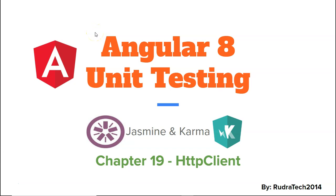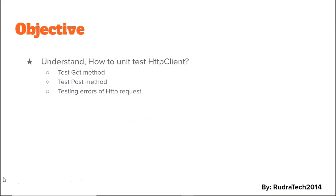Welcome to RubroTech tutorial. In this chapter 19 of Angular 8 unit testing with Jasmine and Karma, we are going to look at HTTP clients. The objective of this video is to understand how to unit test the HTTP client, and we are going to execute three specific test cases: first, to test the GET method; second, to test the POST method; and third, to test the errors of HTTP requests.